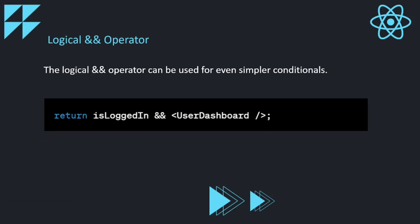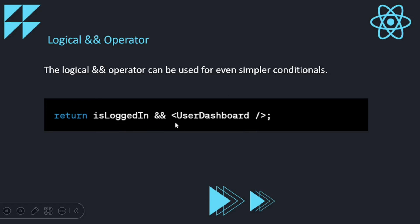Now let us look at the logical AND operator, also called the short circuit operator in JavaScript. This can be used for even simpler conditions — suppose you just have an if condition with no else. For example, if is_logged_in is true, then only you display the user dashboard; otherwise in all other scenarios you don't need to do anything. In that case you can make use of the logical AND operator.